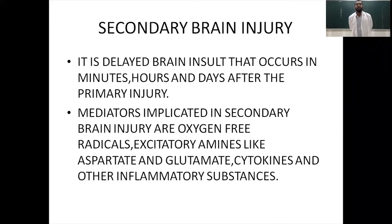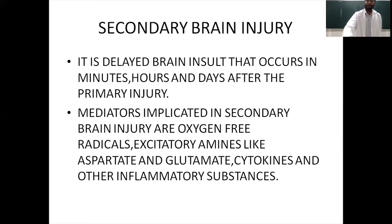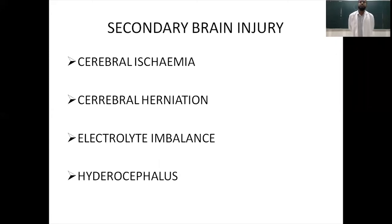What is secondary brain injury? It is the delayed brain insult that occurs within minutes, hours, or even days after the primary injury. The mediators implicated include oxygen free radicals, excitatory amines like aspartate and glutamate, cytokines, and other pro-inflammatory substances. Secondary brain injury consists of cerebral ischemia, cerebral herniation, hydrocephalus, and electrolyte imbalance caused by the primary brain injury.